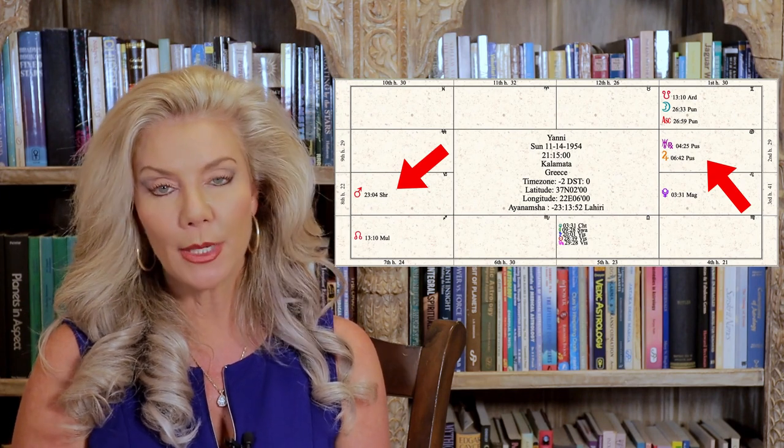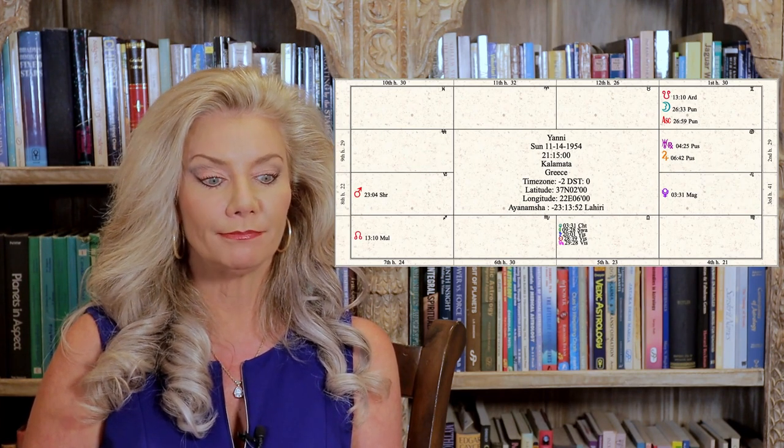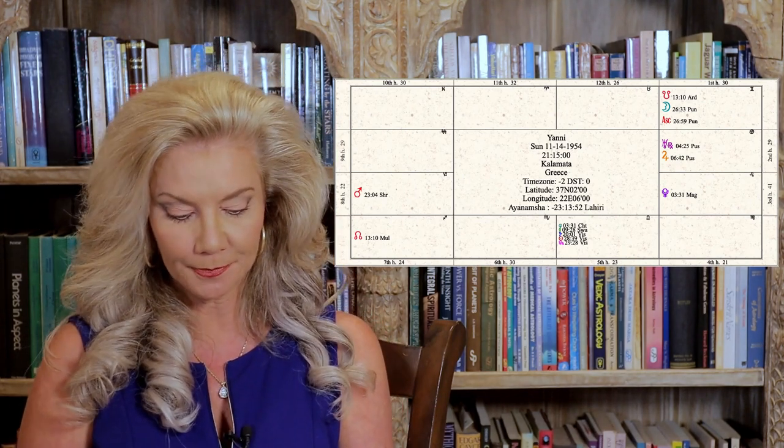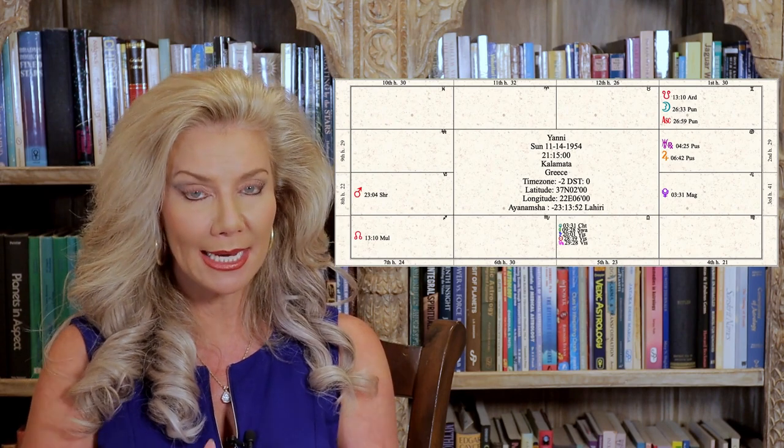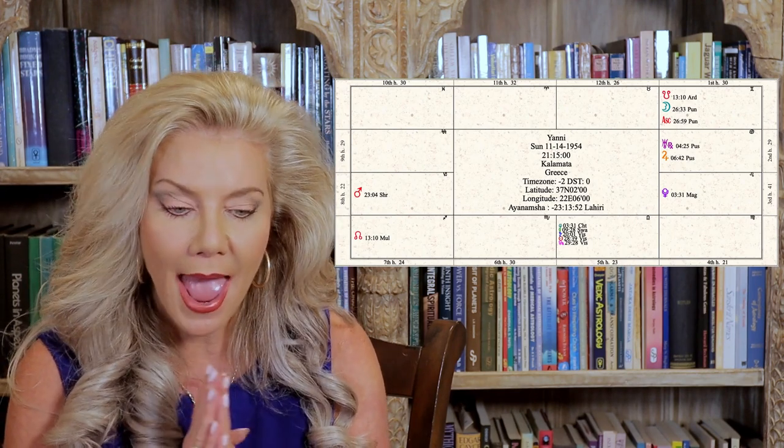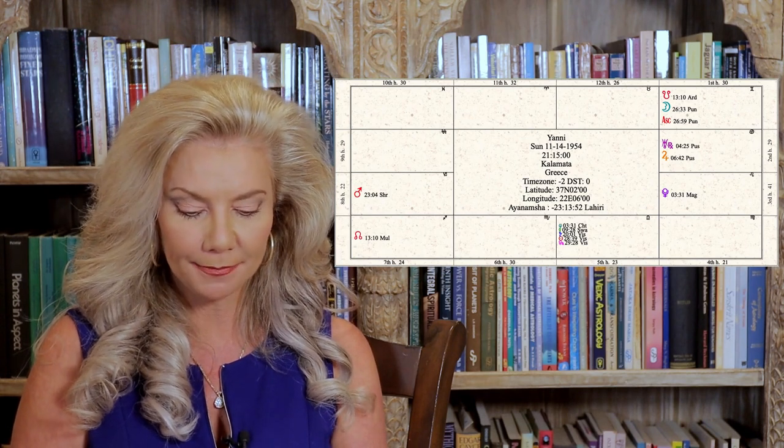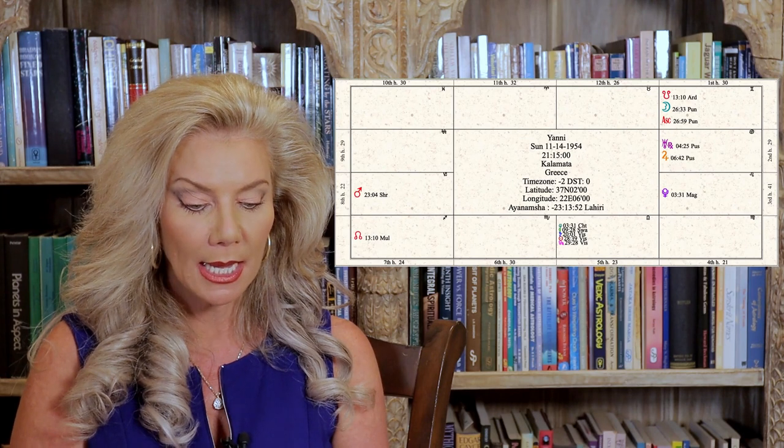The one thing that I really wanted to point out is a time when Yanni really broke out and became mega wealthy. This was a windfall. It was in 1993 when he planned a concert at the Acropolis. He put up all of his money, $2 million, everything he had, he put into this concert, knowing that it would be a success. And it was off the charts because he couldn't have planned it better astrologically.